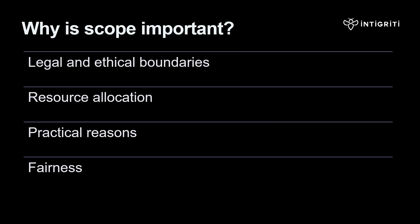Secondly, resource allocation. Some programs prefer to slowly expand their scope for a few reasons: they might need time to secure some assets and get them ready for testing, they might want to focus on critical assets first, and they might have limited funds available for bug bounty. By directing their attention and their budget, organizations can focus the scope according to their goals and available resources.